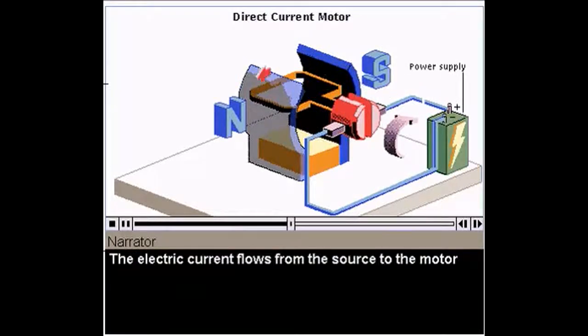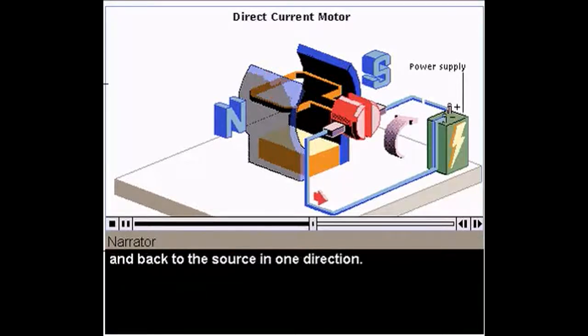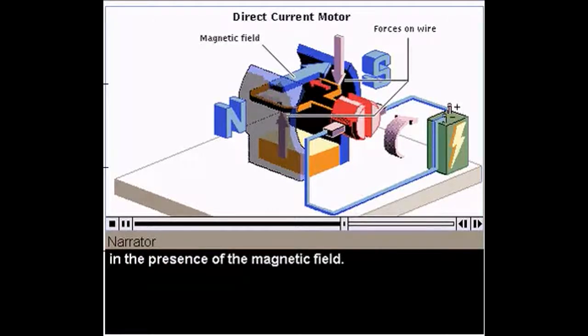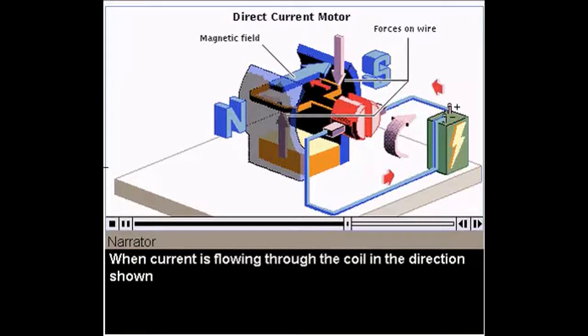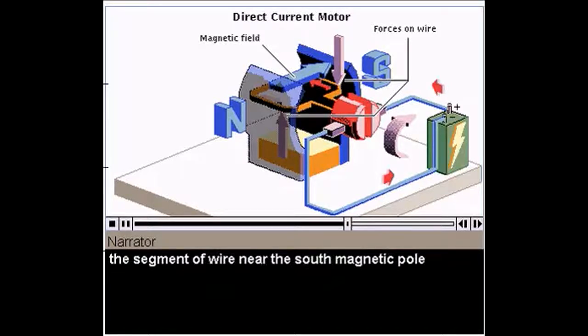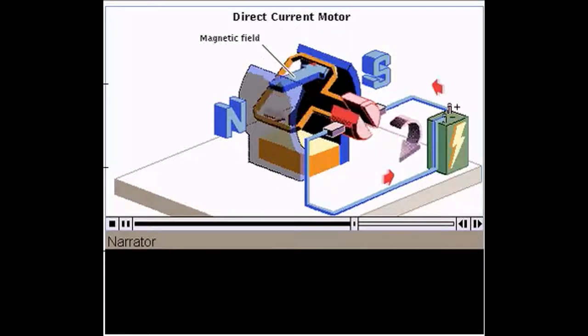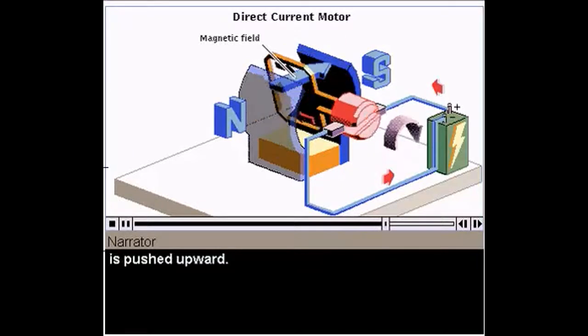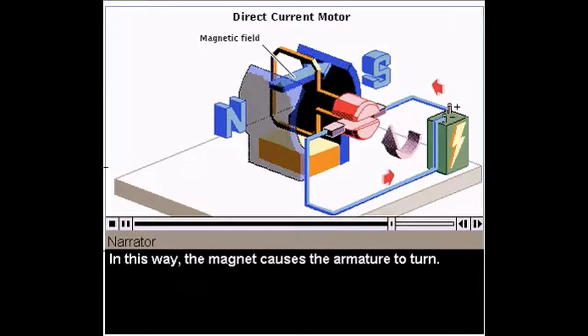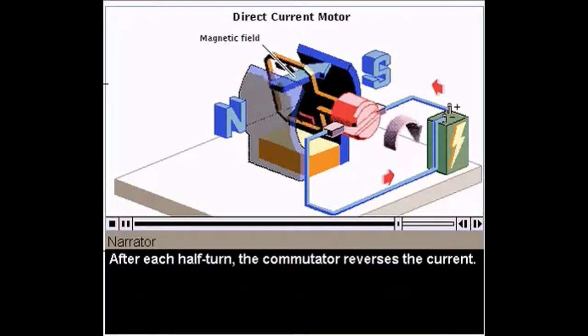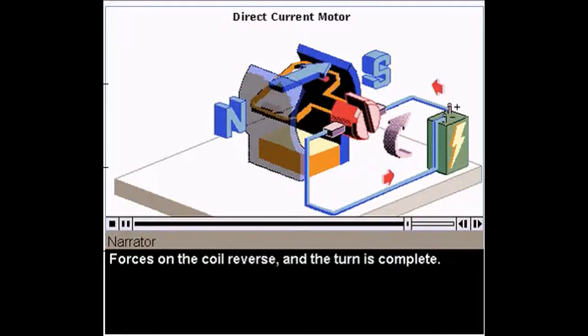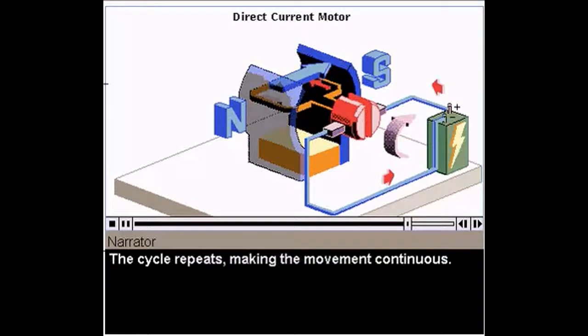The electric current flows from the source to the motor and back to the source in one direction. The current carrying wires in the coil experience forces in the presence of the magnetic field. When current is flowing through the coil in the direction shown, the segment of wire near the south magnetic pole is pushed downward by the magnet. The segment near the north magnetic pole is pushed upward. In this way, the magnet causes the armature to turn. After each half turn, the commutator reverses the current. Forces on the coil reverse, and the turn is complete. The cycle repeats, making the movement continuous.